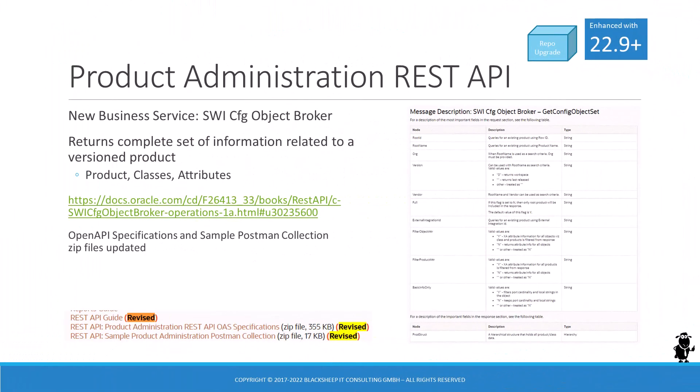Siebel CRM 22.9 puts quite some emphasis on the REST framework. The product administration REST API grows stronger with a new business service by the name of SWICFG Object Broker. This new service is included in the Optional Repository Upgrade and allows retrieval of the complete set of versioned products, including information about its classes and attributes. The REST Bookshelf guide and the auxiliary zip archives — OpenAPI specifications and Sample Postman Collection — have been updated accordingly.